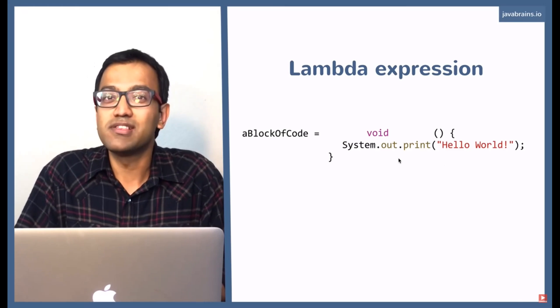There's one further shortcut: if the body of the Lambda expression is just one line — like System.out.print — you can remove the curly braces, and it just becomes: parentheses, arrow, then that line of code. But remember, this is only if you have just one line. If you have multiple lines, you'll need the curly braces. That's how you write Lambda expressions.